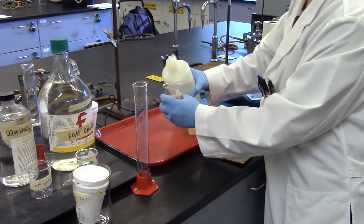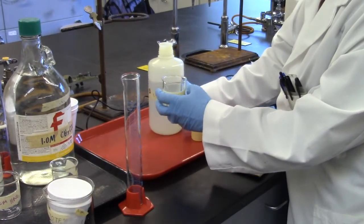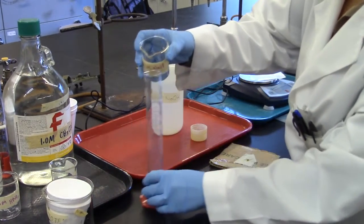Measure out 50 milliliters of sodium hydroxide into a 100 milliliter graduated cylinder.